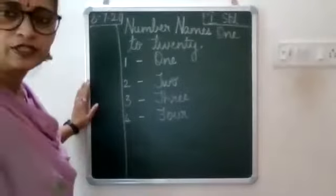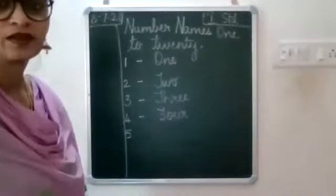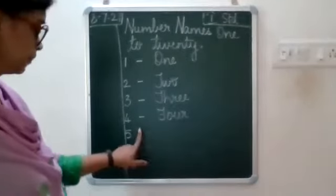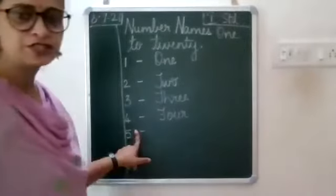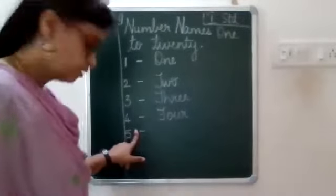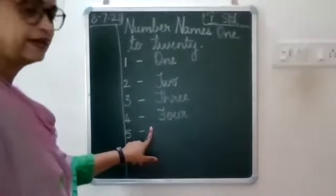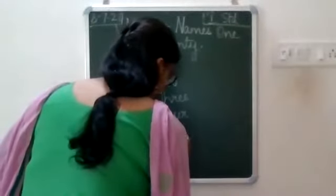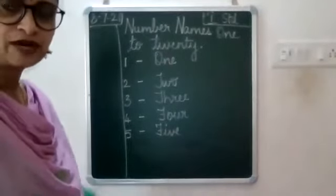Again leave a line, write FIVE. Leave a finger space, put a small dash, leave a finger space, then write capital F-I-V-E, five.